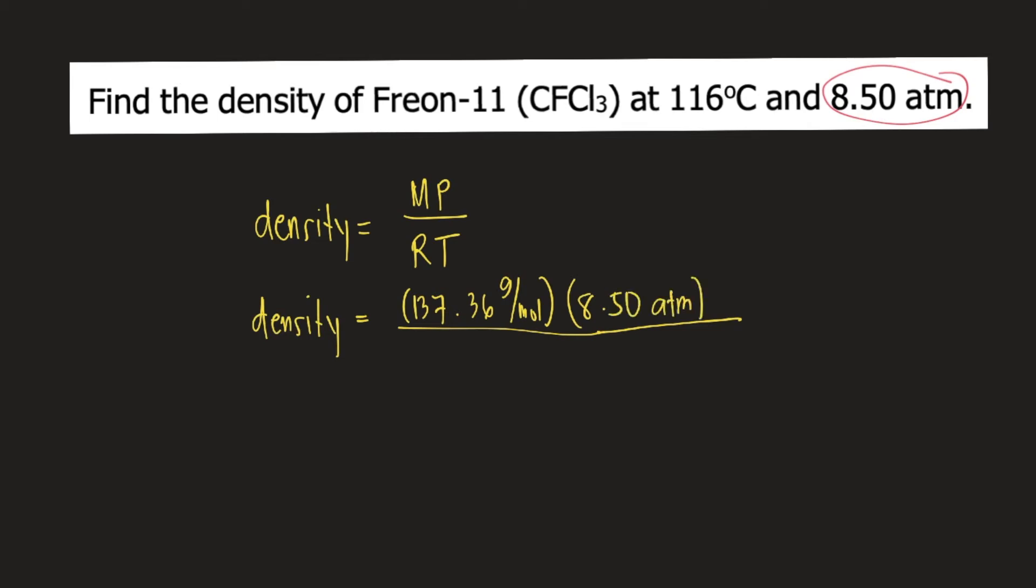R, of course, is the gas constant. Its value is 0.0821 liter atmosphere per mole Kelvin. And T is the temperature in Kelvin.